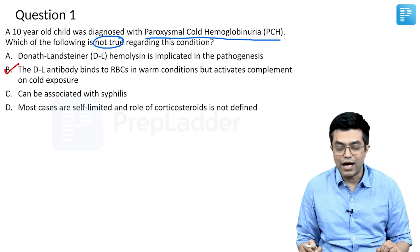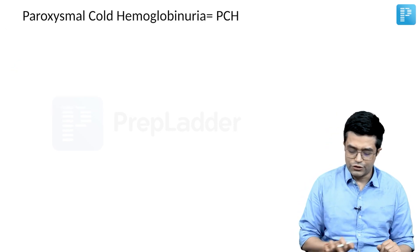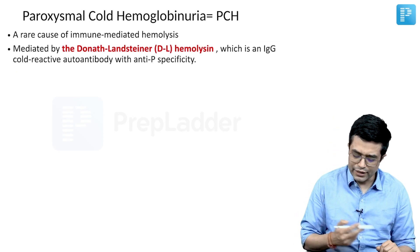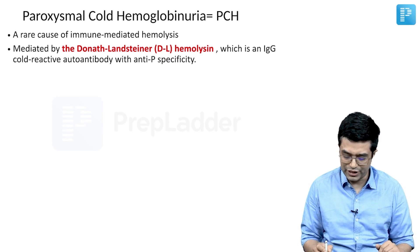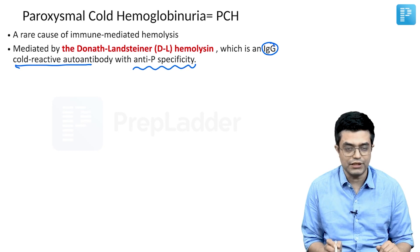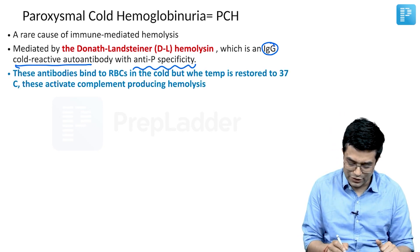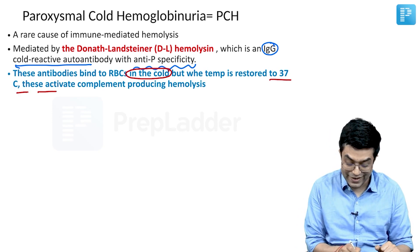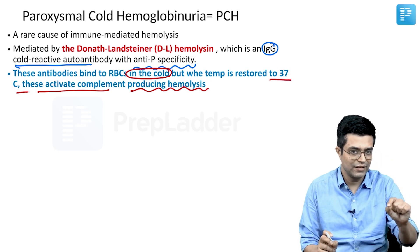Some key points related to PCH, taken from Nelson, Harrison, and a review article from Indian Pediatrics: PCH is a rare cause of immune-mediated hemolysis. It is mediated by the Donath-Landsteiner hemolysin, which is an IgG-type cold-reactive autoantibody with anti-P specificity on RBCs. These antibodies bind to RBCs in the cold, but when the temperature is restored to 37°C, they activate complement, producing hemolysis.